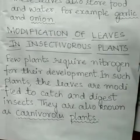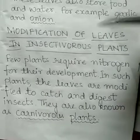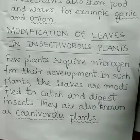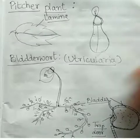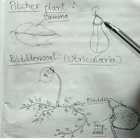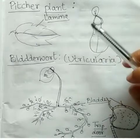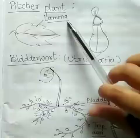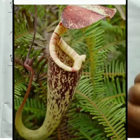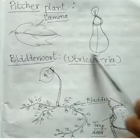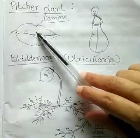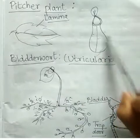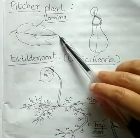In such plants, the leaves are modified to catch and digest insects, and they are also known as carnivorous plants. The first example is the pitcher plant. The leaf is shaped like a pitcher — the lamina of the leaf gets modified into a pitcher shape.